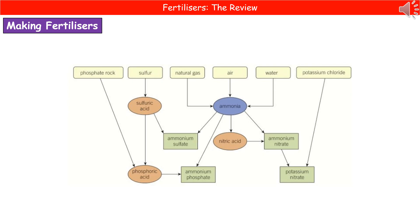The overall manufacturing process can be summarized in a diagram where the four fertilizers are shown alongside the chemicals needed to make them. For example, ammonium sulfate is made by starting with sulfur, converting it to sulfuric acid, and reacting that with ammonia from the Haber process — which uses natural gas, air, and water. The same logic applies to the other fertilizers.